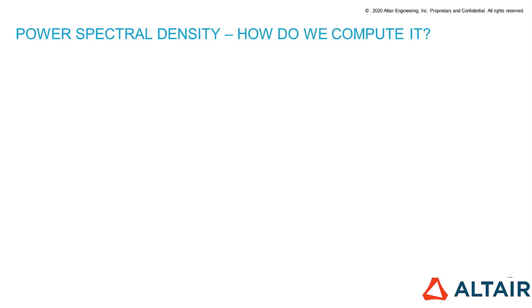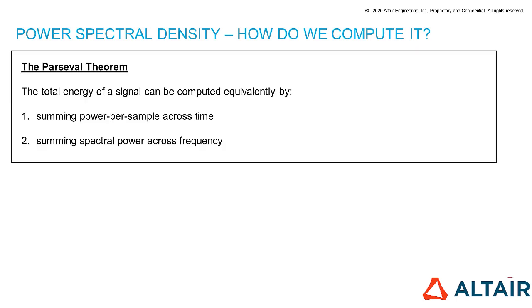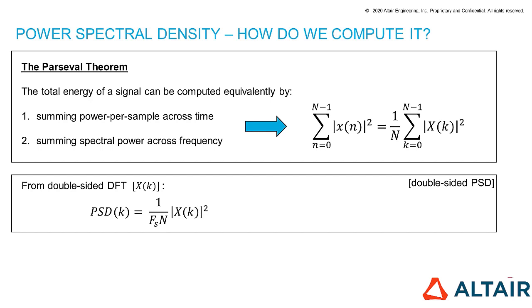And the next question is, how do we compute it? In order to get it, we can leverage the Parseval theorem. The interpretation of this theorem is that the total energy of a signal can be computed equivalently by summing power per sample across time or summing the spectral power across frequency. And for discrete time signals, it can be translated in mathematical language through this formula, where the capital X stands for the coefficient of the discrete Fourier transform, which more practically is what we get from the FFT algorithm.